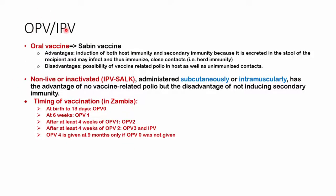With OPV and IPV: OPV is also known as Sabin, and the IPV or inactivated vaccine is also known as Salk. The advantage of OPV is that it induces both host immunity and secondary immunity because you swallow it, activating gut immunity, and it's passed on in the stool. However, it may be passed on to unvaccinated individuals and cause vaccine-associated polio in unimmunized contacts. The inactivated vaccine is given subcutaneously or intramuscularly and does not have any vaccine-associated polio disease.